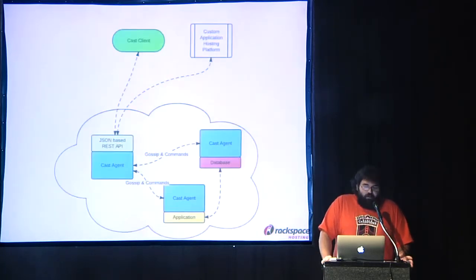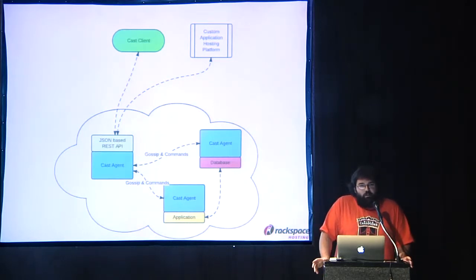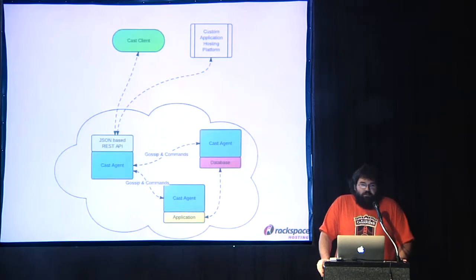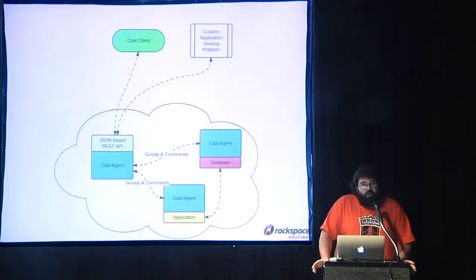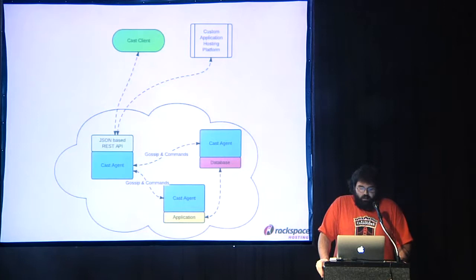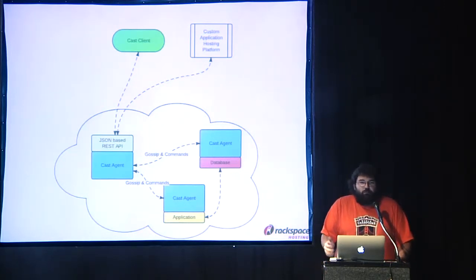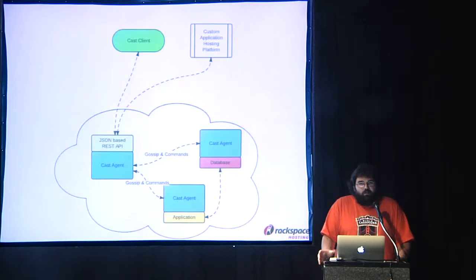At a high level, this is what we want Cast to look like in the long run — it's not all the way there yet. Basically you have a series of agents that install on your servers, wherever they are. Cast doesn't really care. Then there's a set of REST APIs you use to communicate with those agents, and those agents are kind of self-organizing and talk to each other over a peer-to-peer protocol.